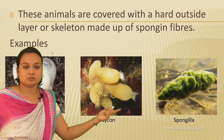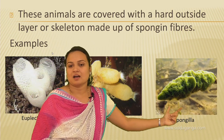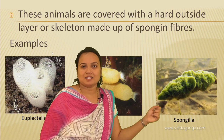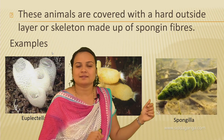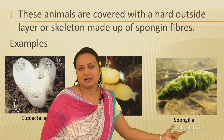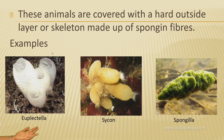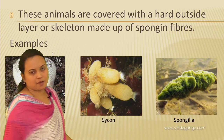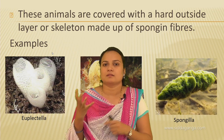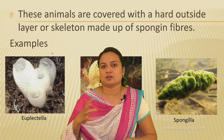Some Cnidarian species live in colonies and others are solitary. Organisms that live in colonies — like corals — live in groups, possibly of the same or different species. Solitary organisms, like hydra, are free swimming and live alone. Hydra is free swimming and solitary, whereas corals live in colonies.